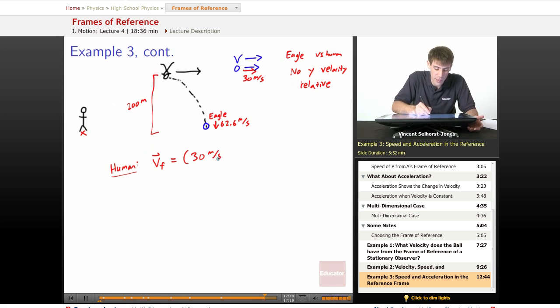The y will be 30 meters per second because it hasn't had any change to it. There's no horizontal acceleration. The only thing acting on the rock is gravity. So, 30 meters per second. And we know from the eagle's reference frame that when it hits the ground, it's going at 62.6 meters per second down into the ground.